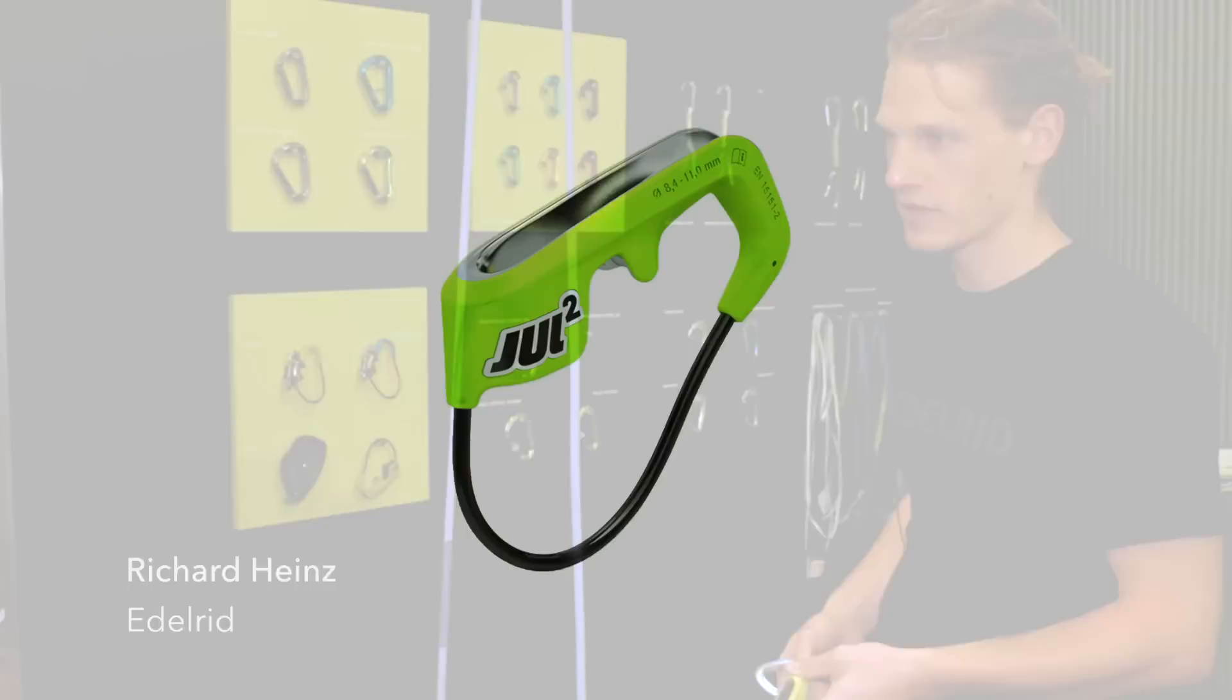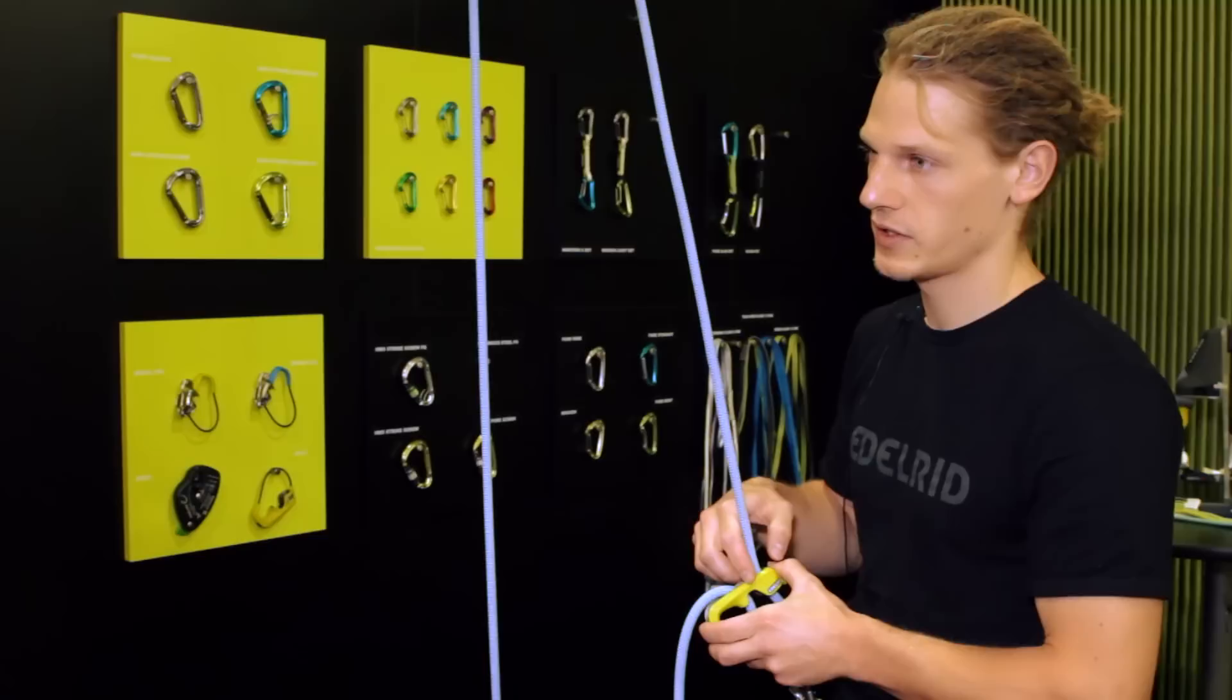I'm Richard from Edelrid. The Jul 2 is basically a single cuber. It's based on the same concept as the Mega Jul that we showed last year. It's a brake assisted cuber belay device that we can actually use for thicker ropes.